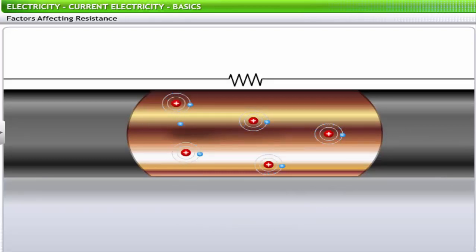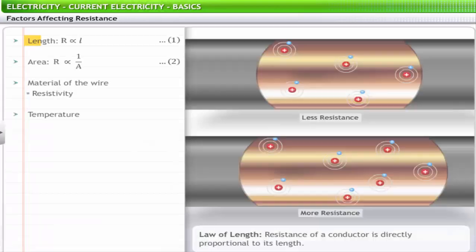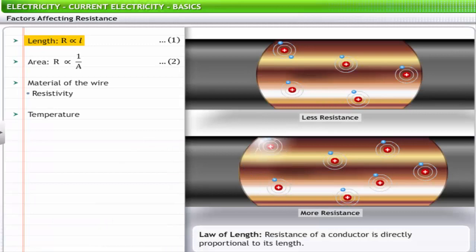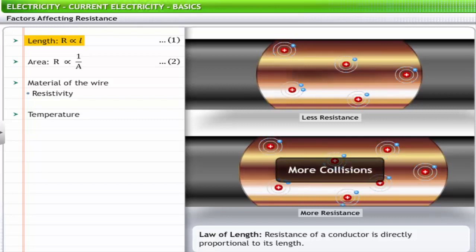Resistance to charge flow within a conductor is affected by some clearly identifiable variables. First, the resistance of a conductor is directly proportional to its length. The longer the conductor, the more resistance it offers. After all, if resistance occurs as a result of collisions between electrons and the atoms of the conductor, then there are likely to be more collisions in a longer conductor. More collisions mean more resistance. This relationship between resistance and the length of the conductor is termed as the law of length.